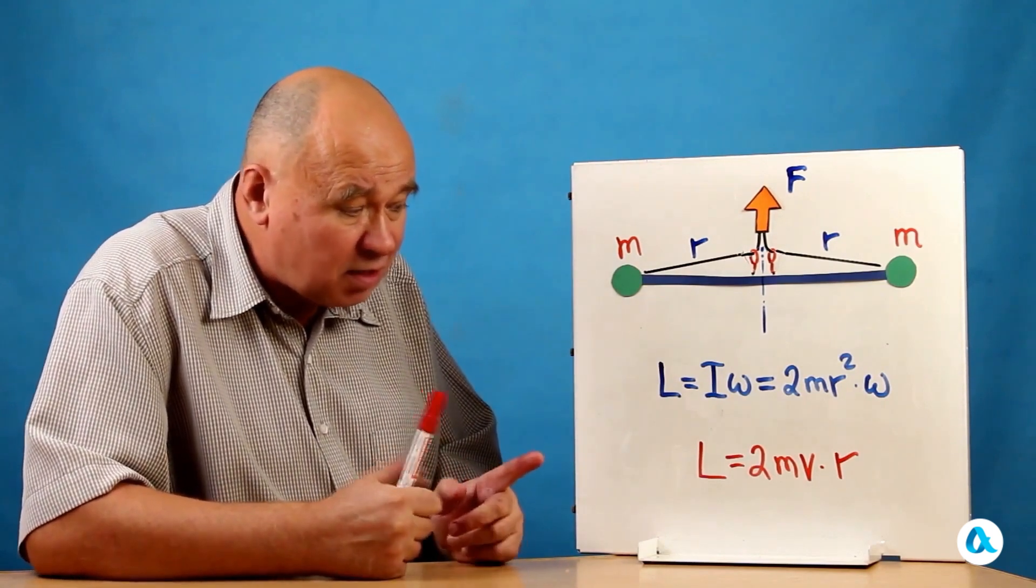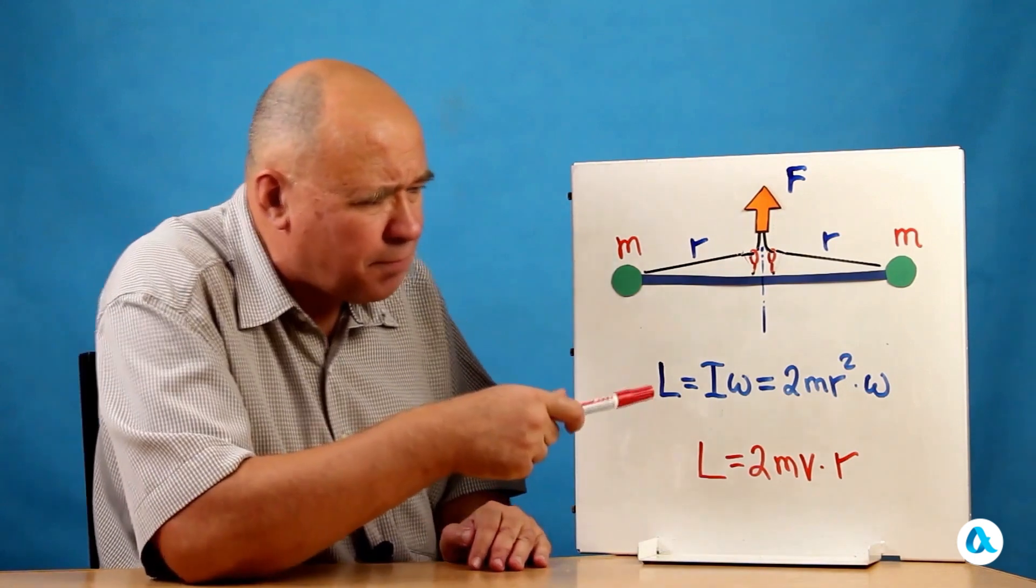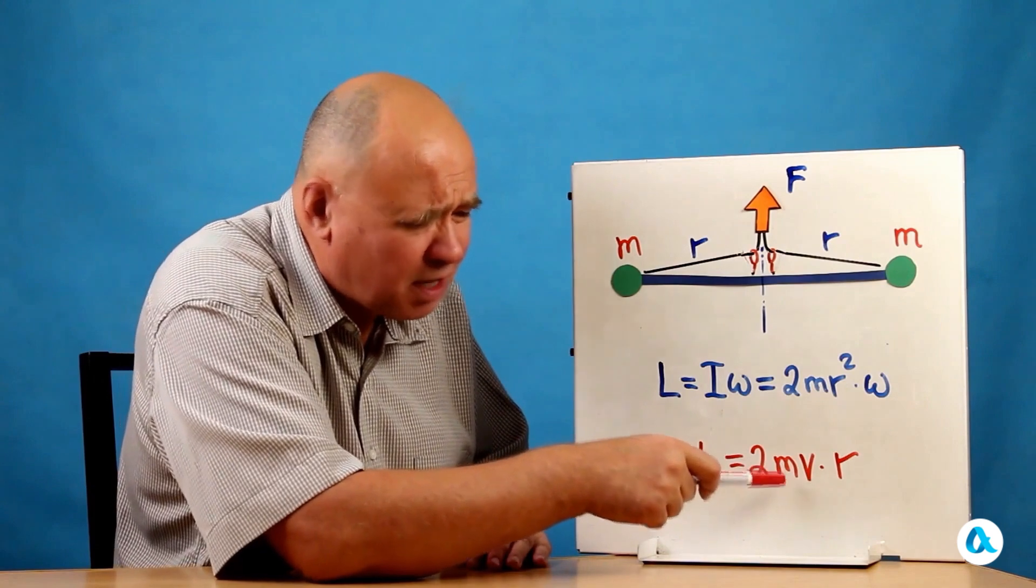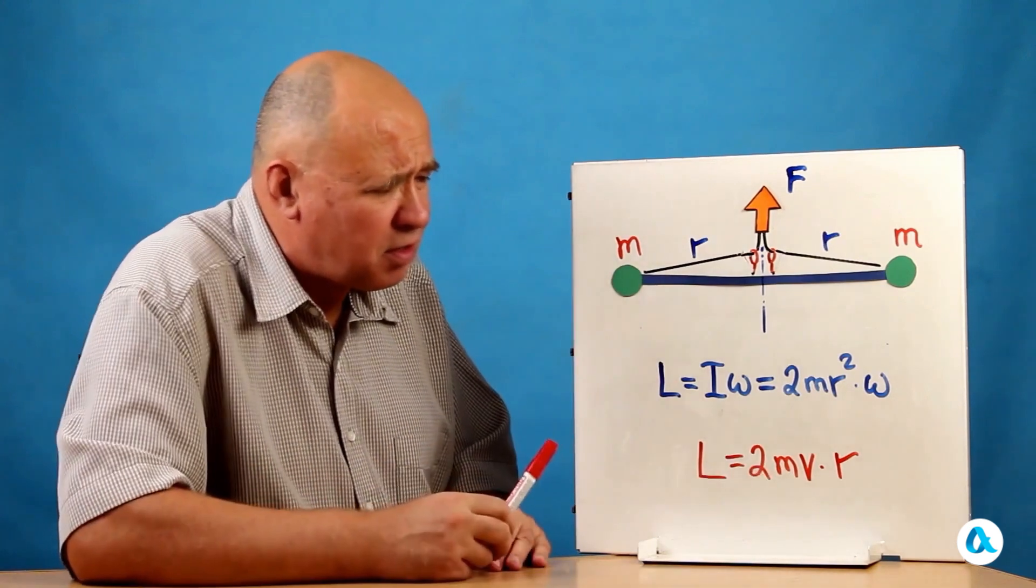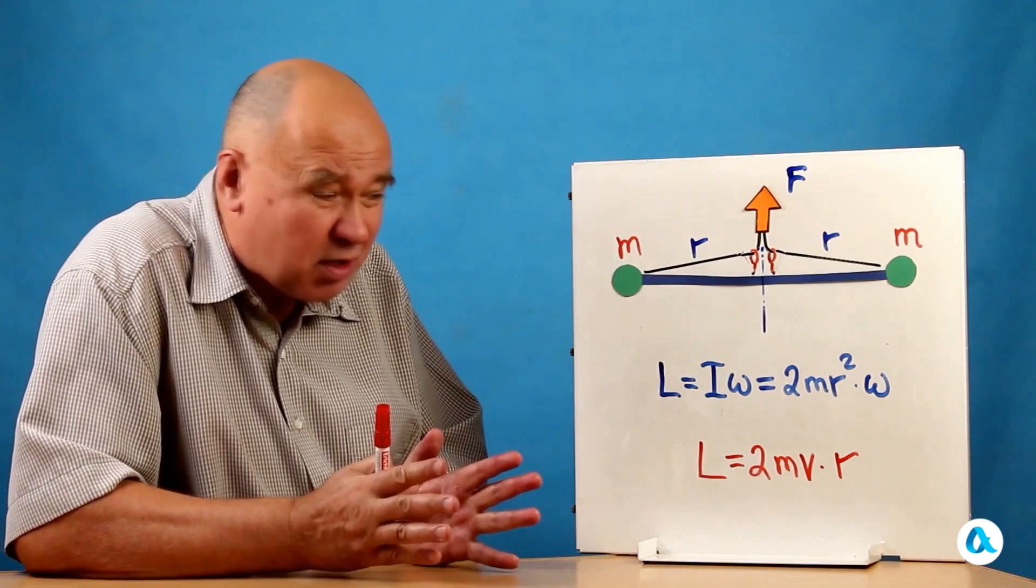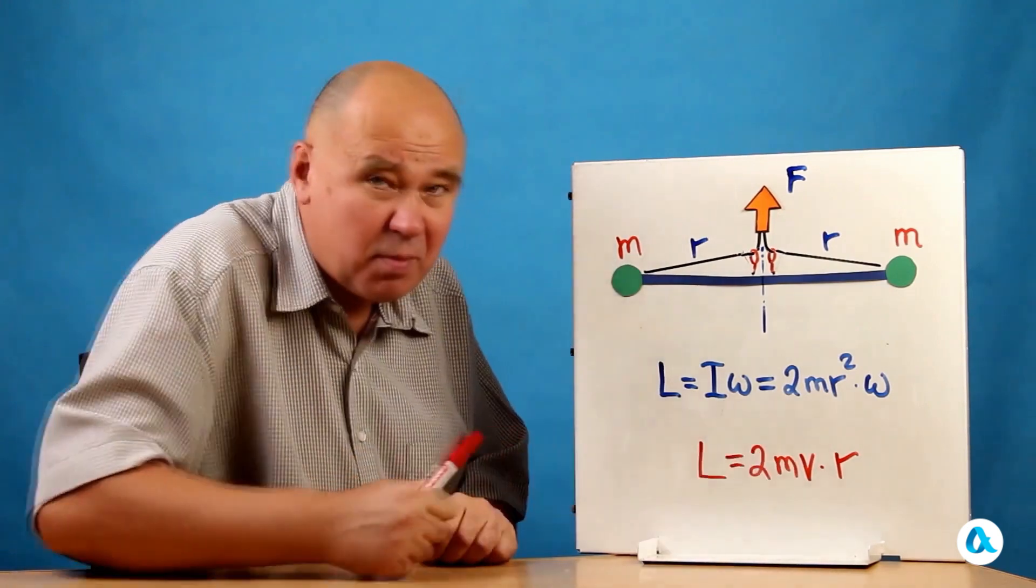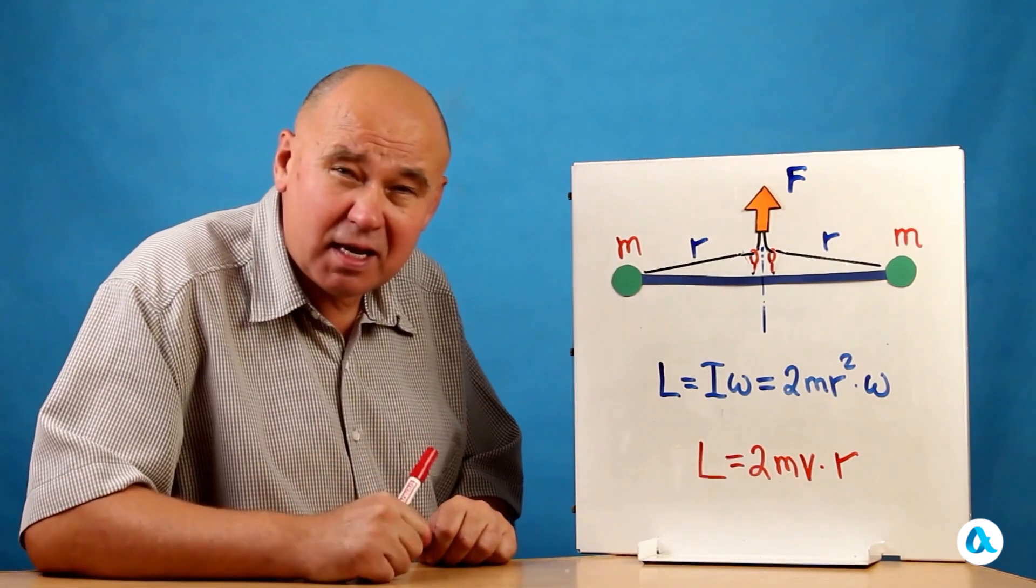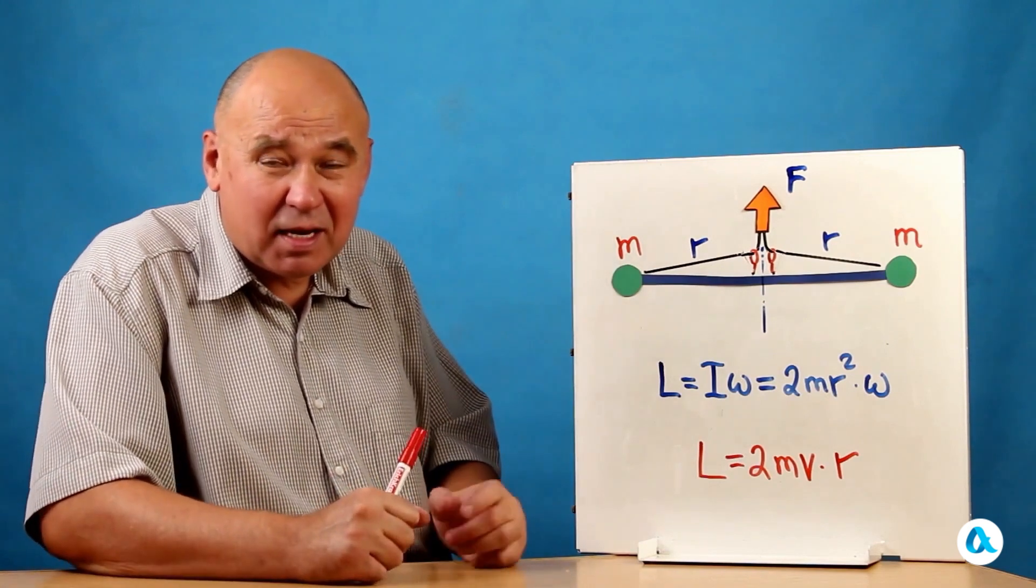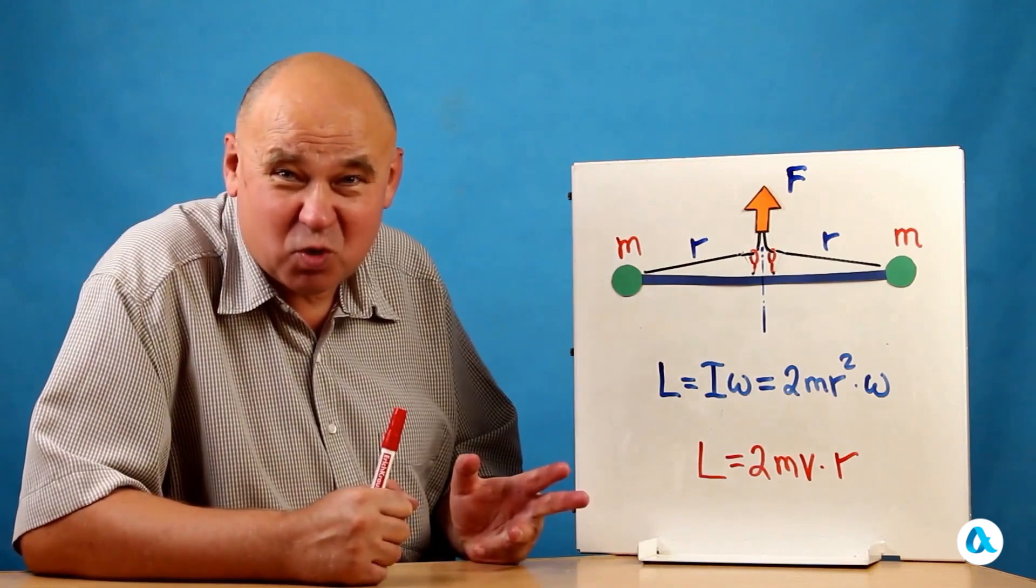But I will rewrite this in another form: L. In linear velocity, I will write 2mVR, where mV is the momentum of each of the balls multiplied by the radius. If the radius has decreased by 5 times, then the linear velocity has increased by 5 times. Kinetic energy is proportional to the square of linear velocity, which means that kinetic energy increases by 25 times. What causes this to happen?